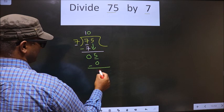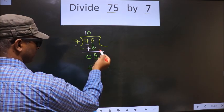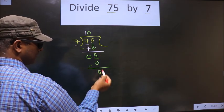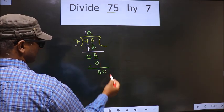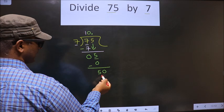Now you subtract, now you get 5. We did not bring any number down. So now you can put a dot and take 0 here. Now here we have 50.